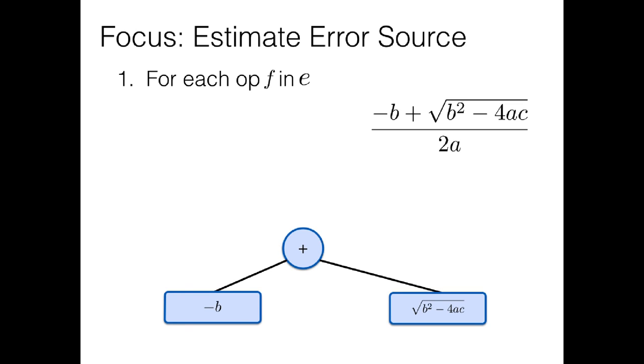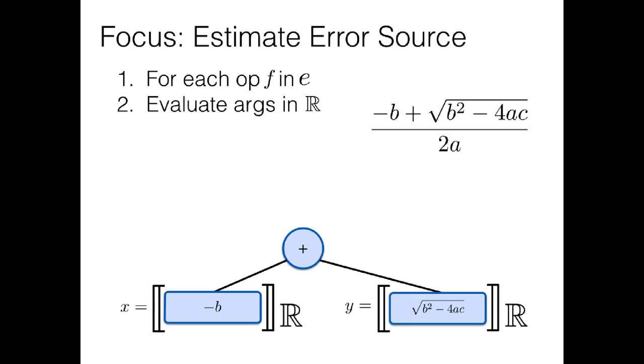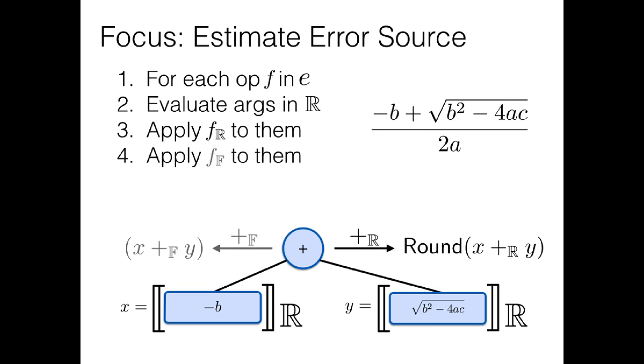We're going to look at every operator in the program. For example, this plus that contributes to cancellation in the numerator. For each of these operators, I'm going to evaluate the arguments in arbitrary precision, getting their exact values. And then given exact values for the arguments, I can evaluate the value of the operator, the result of the operator, both in arbitrary precision, to get an exact value, and in floating point, to get the approximate value due to that operator. If we compare these two, this gives us the error introduced by this operator alone. Note that we evaluated the children of the operator, the arguments, exactly, to avoid blaming any operator for errors caused in its inputs.